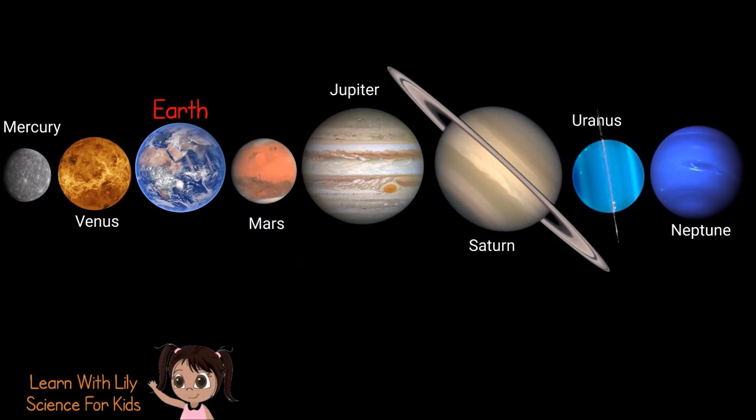We live on Earth. The other planets are Mercury, Venus, Mars, Jupiter, Saturn, Uranus, and Neptune.